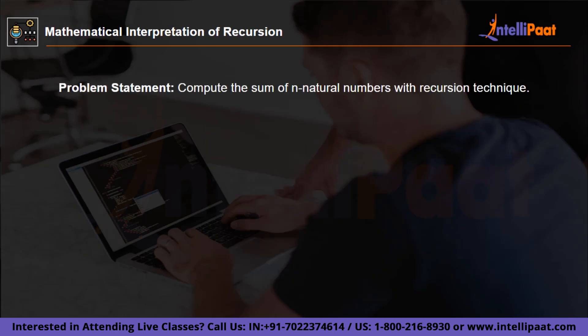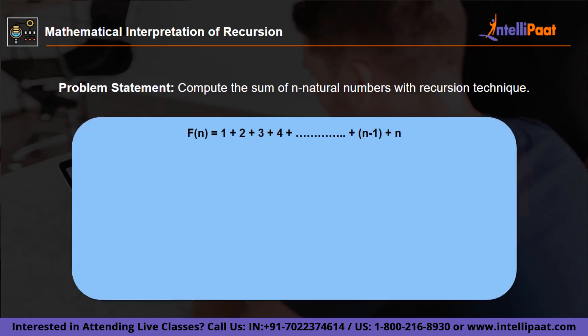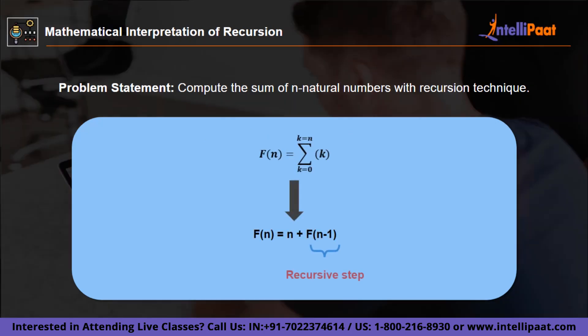Now let's take a look at the mathematical interpretation of recursion. The problem statement is: compute the sum of n natural numbers using the recursion technique. If we try to form a function out of it, the function would say: f(n) = 1 + 2 + 3 + 4 + ... + n. And if we simplify it further, we have f(n) = summation of k from 0 to n. Simplifying even further, we get f(n) = n + f(n-1), where f(n-1) is the recursive step.